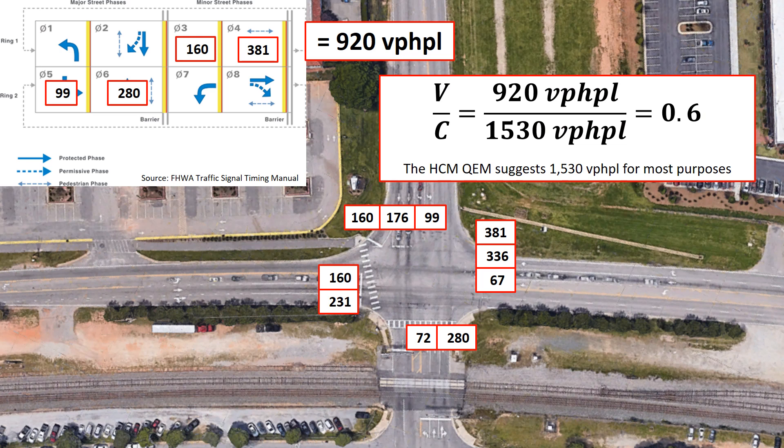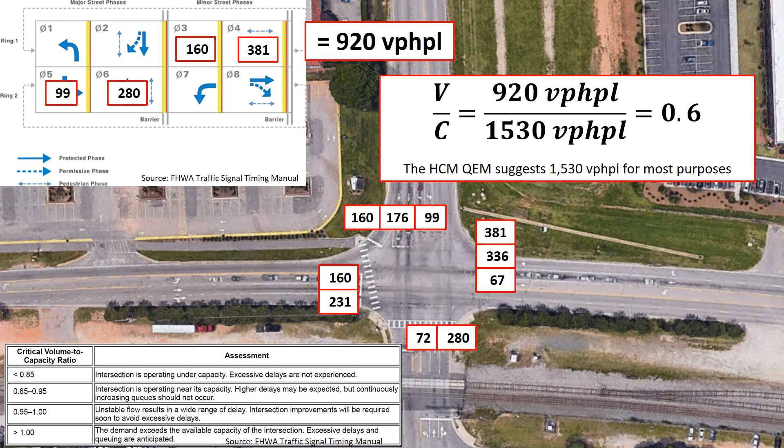To get our volume-to-capacity ratio, we take that flow rate and divide it by the capacity. The Highway Capacity Manual quick estimation method suggests 1,530 vehicles per hour per lane. Of course this varies — it can be 1,300, 1,400, 1,500, or 1,600, possibly outside that range depending on the intersection — but we'll use this standard assumption. That gives us a volume-to-capacity ratio of 0.6, which according to the Traffic Signal Timing Manual is under the lowest threshold, so we don't expect excessive delays.